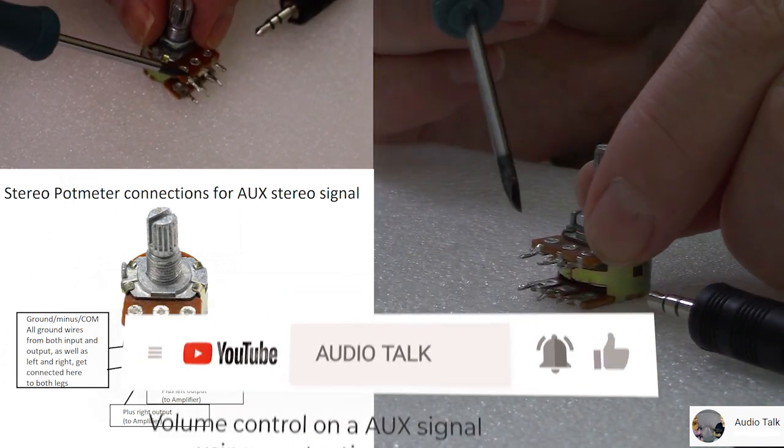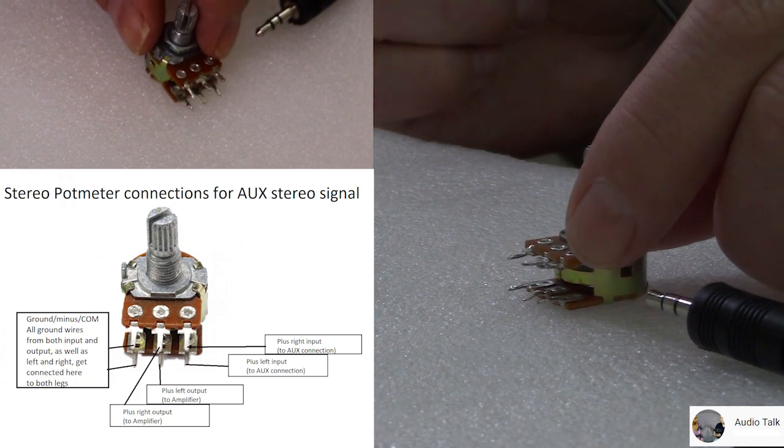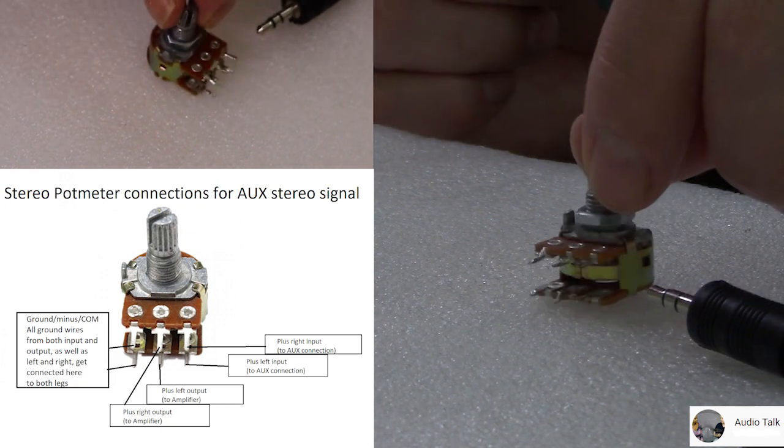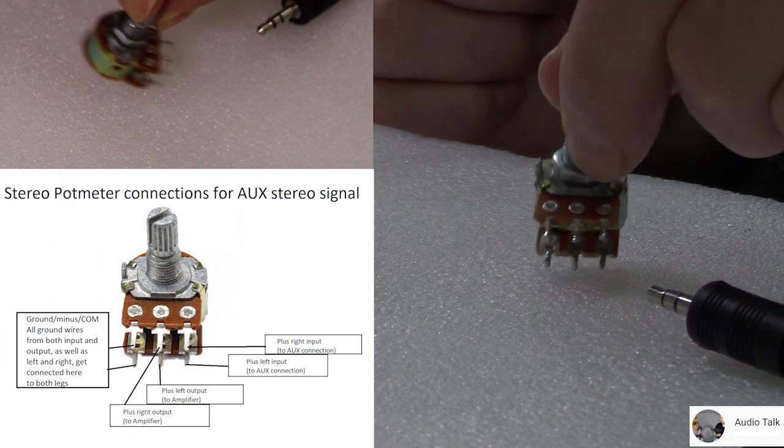Hi there, Ken from AudioTalk. This is how you connect a volume control on your AUX line, like between a Bluetooth streamer and amplifier.